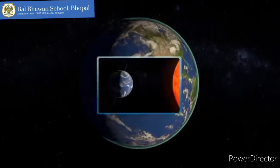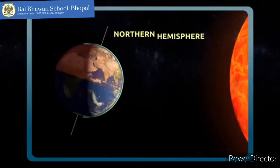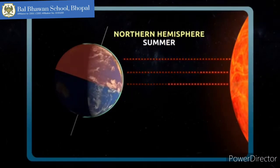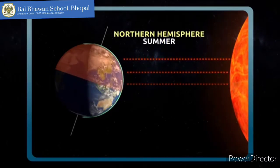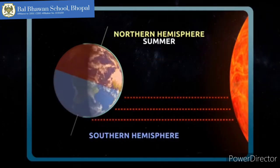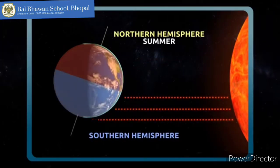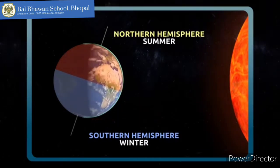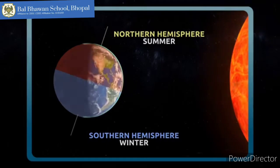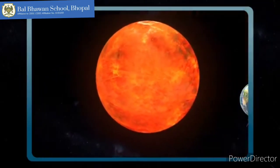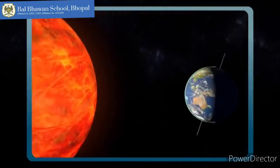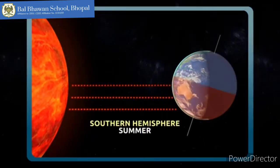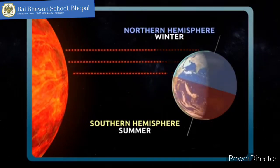The more a hemisphere is inclined towards the sun, the more directly the sunlight reaches the Earth's surface — it's warmer and that's why it's summertime. By contrast, the other hemisphere is less inclined, so sunlight is less direct — that's why it's colder and it's wintertime. Here we can see it's summertime in the northern hemisphere and wintertime in the southern hemisphere. The opposite will occur in six months: sunlight will reach the southern hemisphere more directly and it will be summer, while in the northern hemisphere it will be winter.